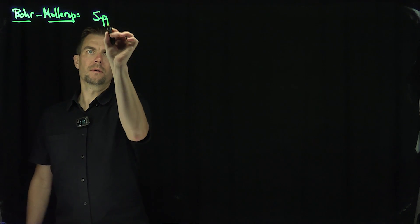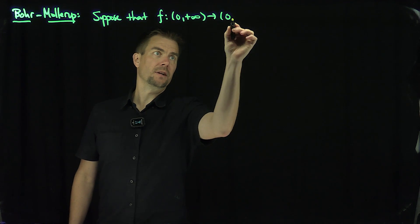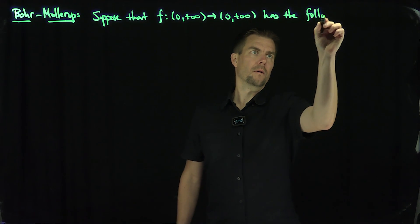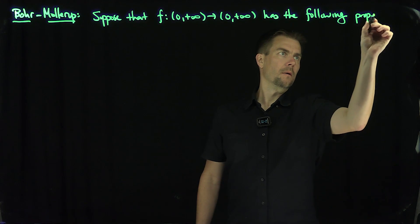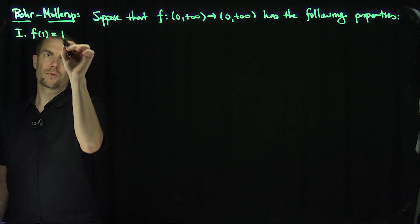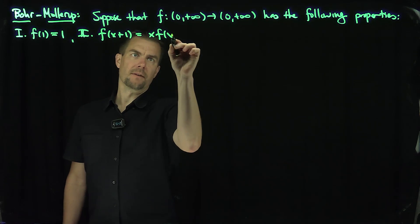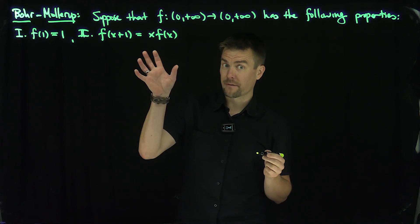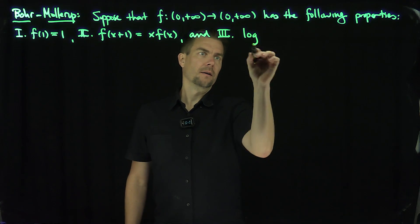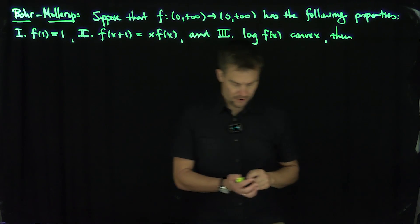What does it state? It states: suppose that f maps (0, +∞) into (0, +∞) and has the following three properties. Property 1 is that f(1) = 1. Property 2 is that f(x+1) = x·f(x) for all x > 0 — we know the gamma function satisfies this property. And property 3 is that log f(x) is convex. Then the function f has to be the gamma function.